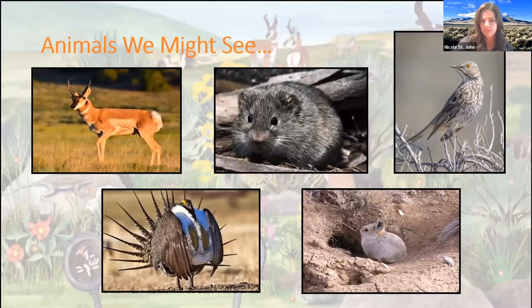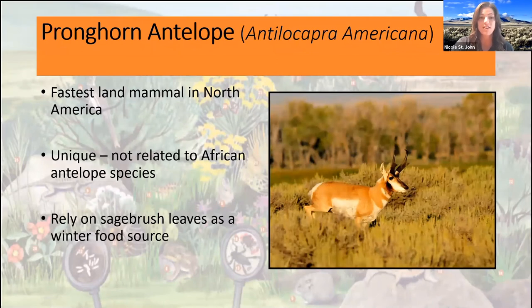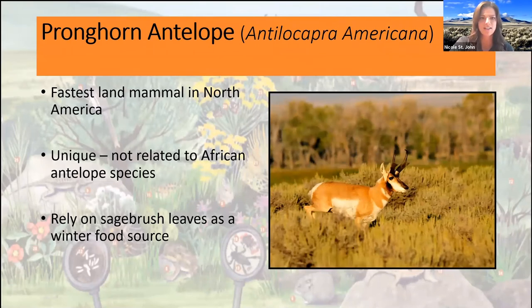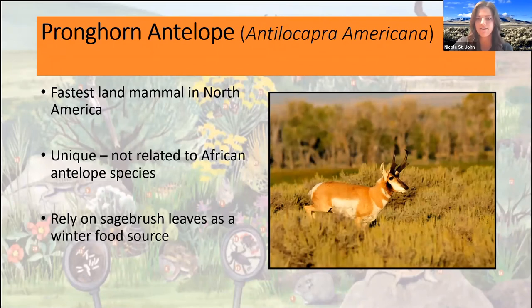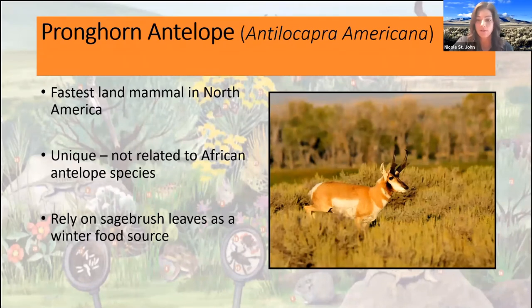The first wildlife species we're going to focus on today is the pronghorn antelope. He's actually the fastest land mammal that we have here in North America — they can run up to speeds of about 65 miles per hour. A fun little fact about these guys is that they are unique because they are not related to the African antelope species. They're actually more closely related to the giraffe than the African species of antelope.